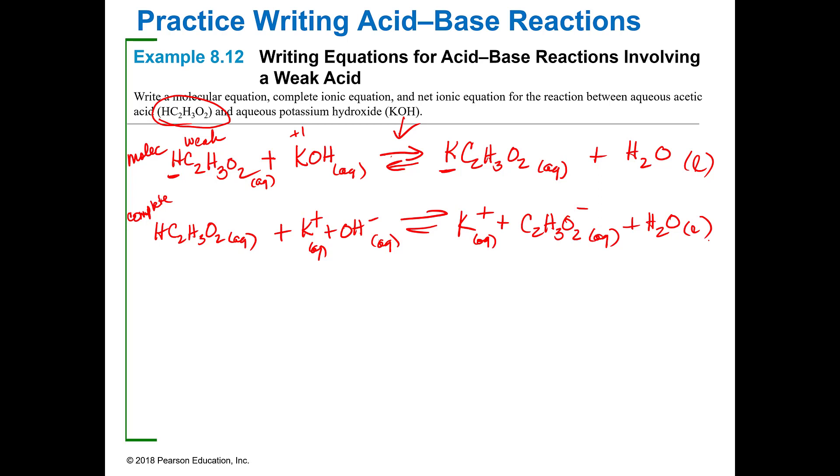So are there spectators? Yes, there are. Potassium is on both sides but that's the only one I see. So in a weak acid you're still going to have the molecular form of the acid that you started with.